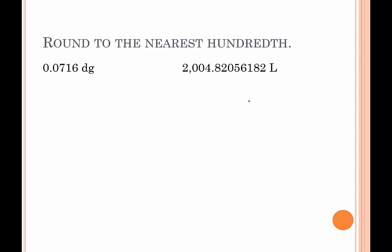How about rounding to the nearest hundredth? The hundredth is two places to the right of the decimal — tenths, hundredths — so we're looking at the 7 here. The 1 tells the 7 to stay the same. So 0.0716 is in between 0.07 and 0.08, closer to 0.07, giving us 0.07 decigrams. For 2004.82056182 liters, we look at the thousandths place as our critical digit. The thousandths place is a 0, which tells the 2 to stay the same. So this would be 2004.82 liters.